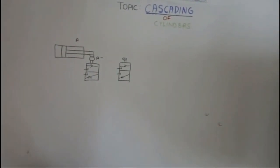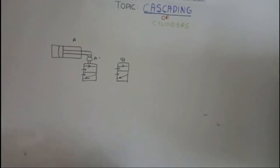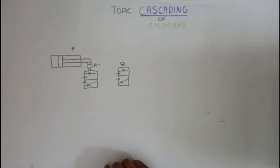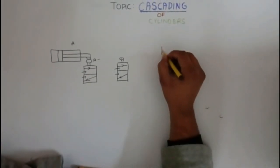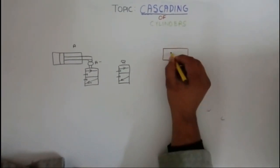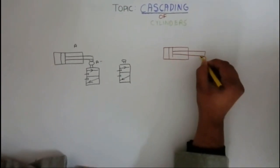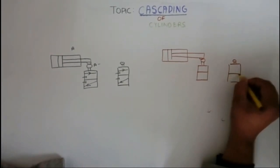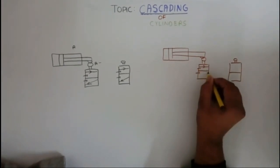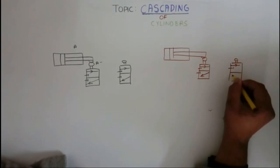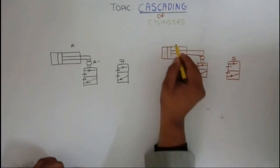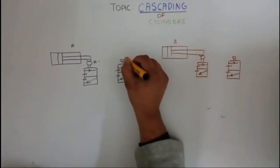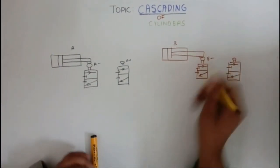In this problem, you are asked to control the movement of two or three cylinders. Let there be another cylinder B with the same projections and a 3/2 valve connected to it — with B negative and B positive terminals.